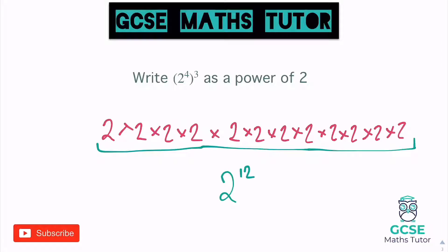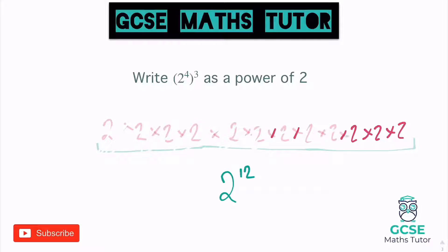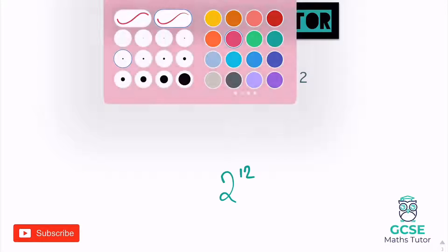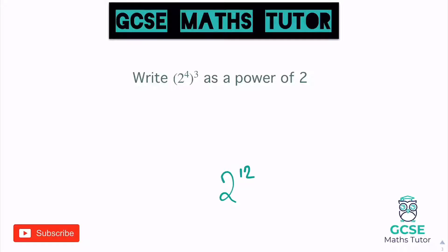So it's actually two to the power of twelve — there's our final answer. Let's have a look again how we get that from the numbers, because we don't actually need to write all that down. So how do we get that from these numbers? Two to the power of twelve is our final answer. If you have a look at the powers there, four times three — four times three equals twelve.